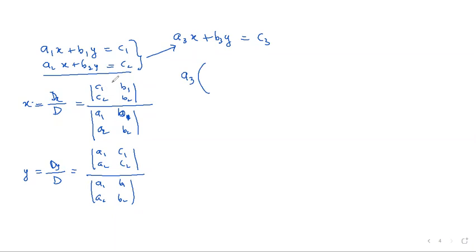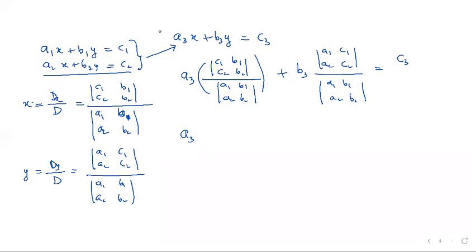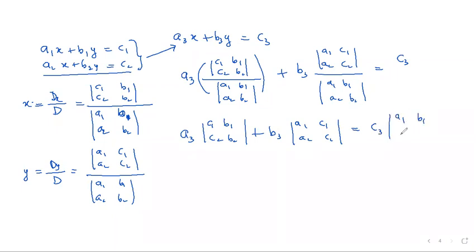Substituting: A3 × (|C1 B1 / C2 B2| ÷ |A1 B1 / A2 B2|) + B3 × (|A1 C1 / A2 C2| ÷ |A1 B1 / A2 B2|) = C3. Cross-multiplying: A3 × |C1 B1 / C2 B2| + B3 × |A1 C1 / A2 C2| = C3 × |A1 B1 / A2 B2|.